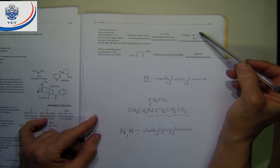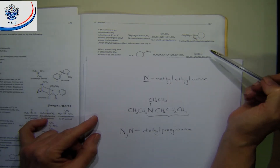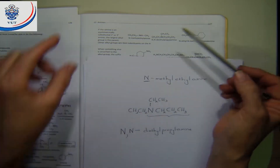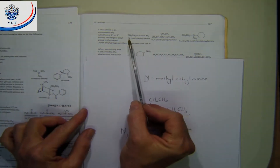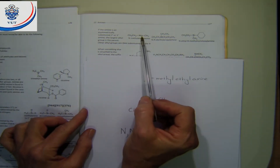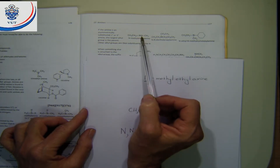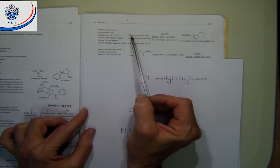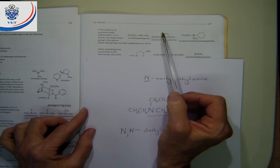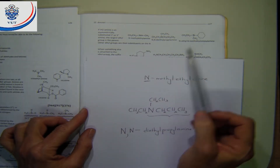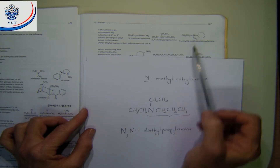Here you have even more of a difference because all three substituents are different. The N-methylethylamine example — you can see it is a secondary amine because there is still one H on the nitrogen and the other two have been substituted. In the N,N-diethylpropylamine example we have a tertiary amine because all three of the H's have been substituted.